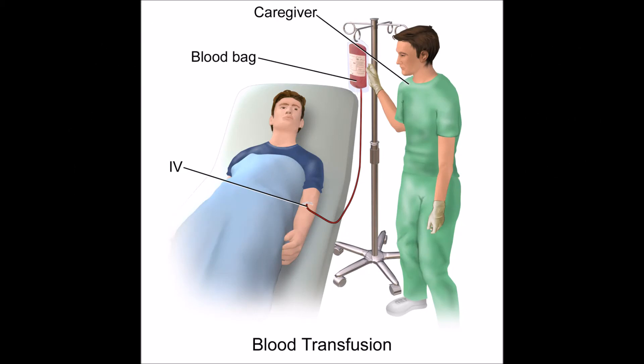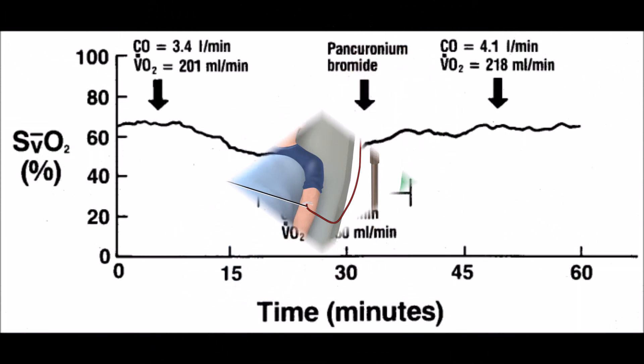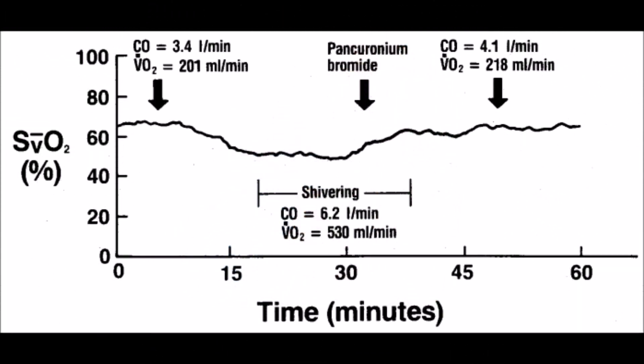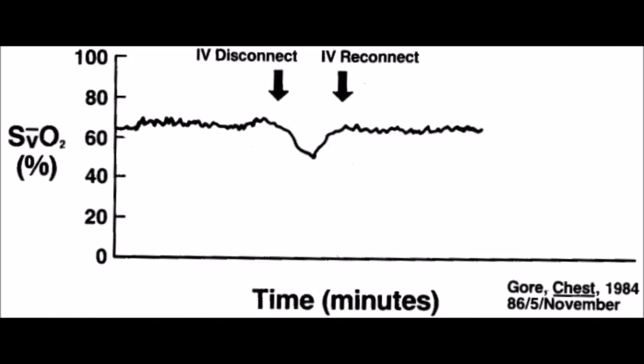Now let's look at what will change SVO2 clinically. For example, when a patient is shivering, you have an increased metabolic state producing more CO2 and decreasing the pH, thus right-shifting the oxyhemoglobin curve. This right shift drops your SVO2, meaning more unloading. The use of pancuronium stops the shivering and your pH stabilizes, as seen in this graph here.